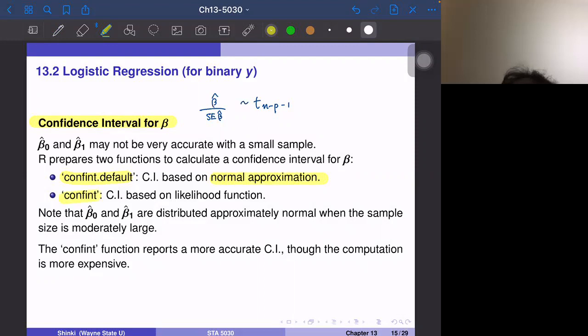Another method is to use the likelihood function. The distribution of beta hat may not be symmetric. Some beta values have higher likelihood. We define the highest point as beta hat, but this may not be symmetric, maybe this kind of distribution.